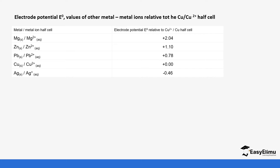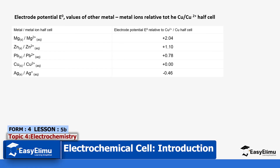You will notice that for magnesium, zinc, and lead the values are positive, and for silver the value is negative — this will be contrary when we get to the standard electrode potential table, which will give opposite values for the metals. For metals it will be negative, and for non-metals it will be positive.